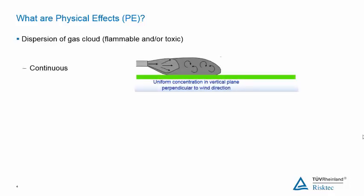The first is continuous release. This usually means the release goes on for more than a few minutes and a steady state plume is achieved. At this steady state, new material released from the hole or breach is sufficient to replace the material lost from the edges of the plume as it mixes with the air.